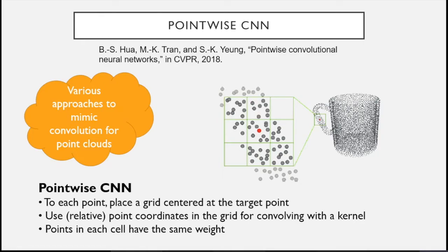Another approach for convolution on 3D point clouds is PointConv. This is a grid-based structure, similar to voxel-based structures but faster. You take a target point and place a grid centered at it. You use the point coordinates in this grid for convolving with a kernel — you know the grid indices so you can match them with the kernel you want to train. All points in a single cell get the same weight, and by this approach you apply convolution to the point cloud.